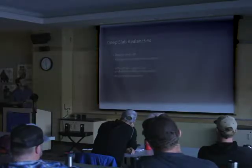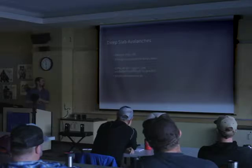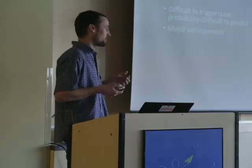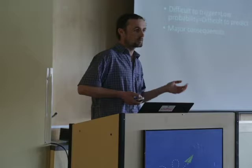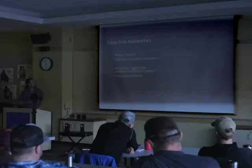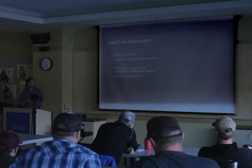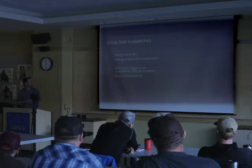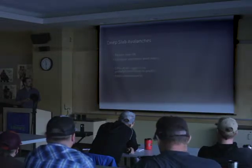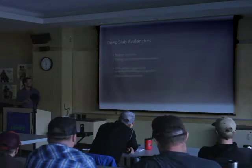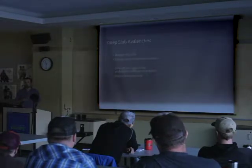When I talk about deep slabs, we're looking at events where the slab is deeper than three feet and failing on a persistent weak layer. These are problems that we deal with all season — maybe we don't see a big event until right at the end of the year. And the problem here, kind of like Ben was pointing out, is the thicker the slab gets, the harder it is to trigger. So it's going to have inherently a low probability of occurrence, and when we're trying to predict events, we're trying to estimate that probability — which by definition makes it difficult to predict.